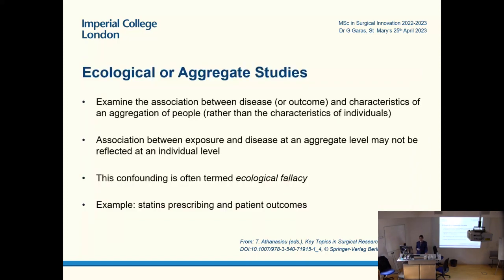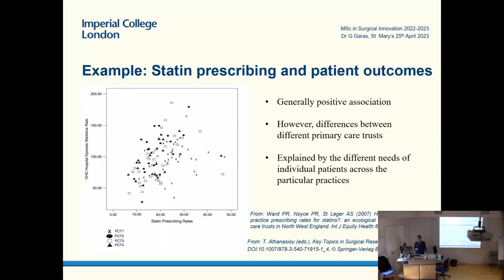Let's briefly look at the design of the different studies, starting with ecological studies. In those studies, you essentially look at the association between an outcome or a disease and characteristics of an aggregation of people. Any association you find may not necessarily reflect the individual patient level — it's at the population level — and that limitation is known as ecological fallacy. As an example, one paper looked at statin prescription rates and cardiovascular events, and although there is a positive association overall, the plots are quite scattered, reflecting the different needs of individual patients and different practices used.